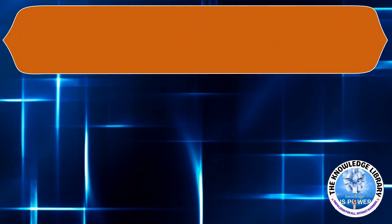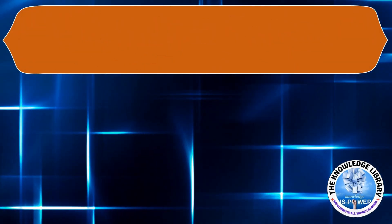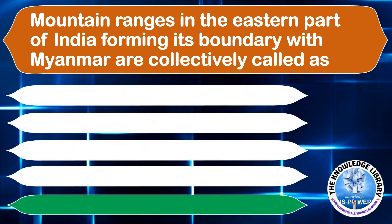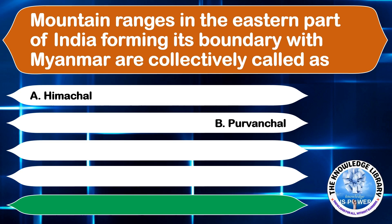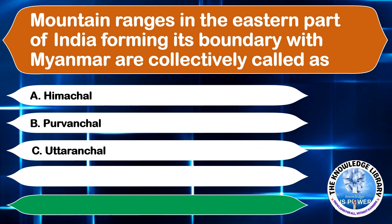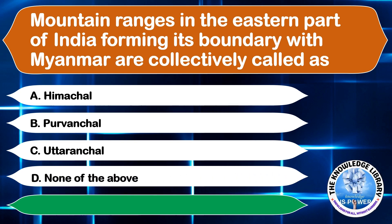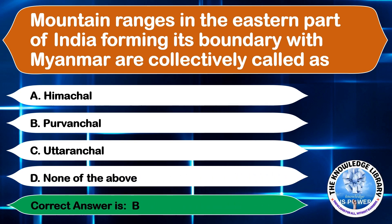Mountain ranges in the eastern part of India forming its boundary with Myanmar are collectively called: A. Himachal, B. Purwanchal, C. Uttaranchal, or D. None of the above. The correct answer is option B, Purwanchal.